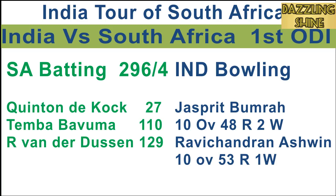Last ball of the over to Bavuma — a half volley and Bavuma leans onto it and punches through the cover for four. First ball of the eleventh over, Shadul to De Kock — full and wide on the off side, De Kock plays it nicely through the cover for four. First ball of the sixteenth over, Ashwin to De Kock — the ball skidded through, beats De Kock, and his off stump is gone. South Africa lose their second wicket; De Kock is gone for 27.